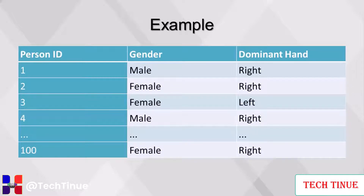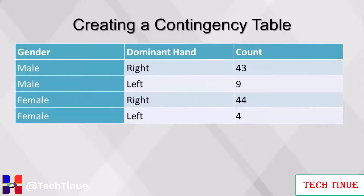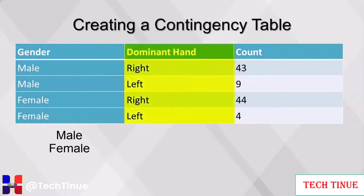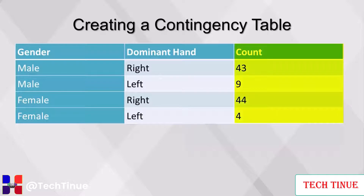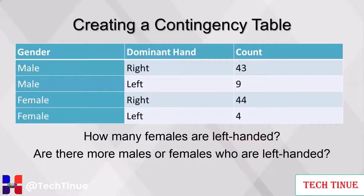In a table such as this, because each row represents one person, we can count the number of rows along each dimension — gender and dominant hand — to analyze how the dimensions are distributed. To create a contingency table, the first step is to aggregate the original dataset along two dimensions, gender and handedness, and count the number of rows for each combination. Since there are two possible values for gender and two for dominant hand, there are four total possible combinations: male/right, male/left, female/right, and female/left. Next we perform a crosstab on the result, moving the dominant hand to the horizontal axis. This makes interpretation easier and allows us to easily calculate totals along each dimension.